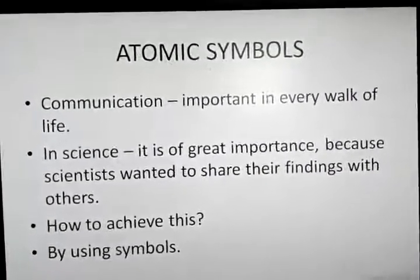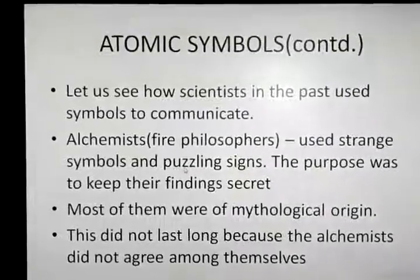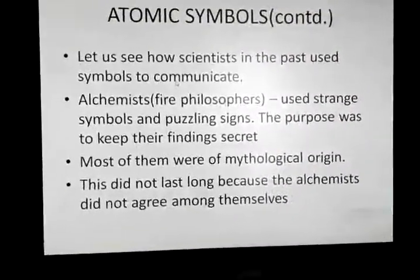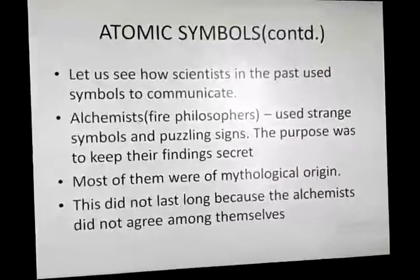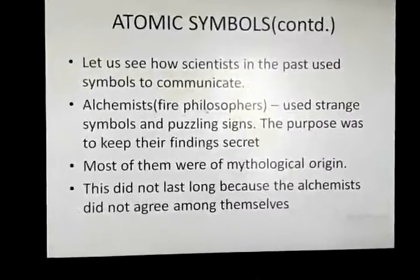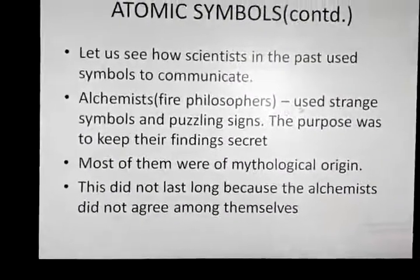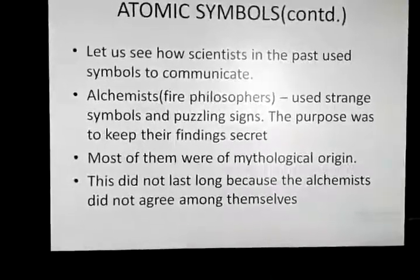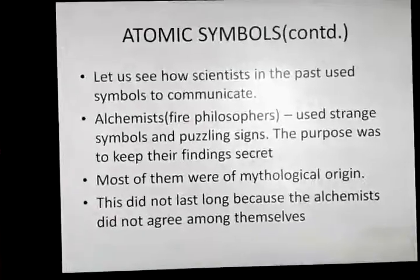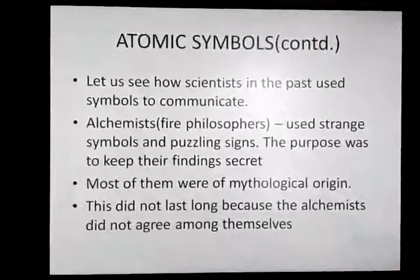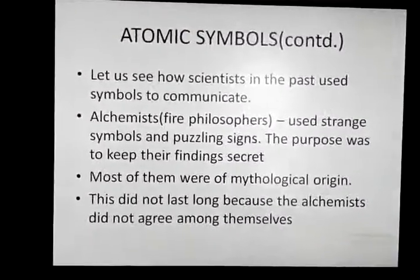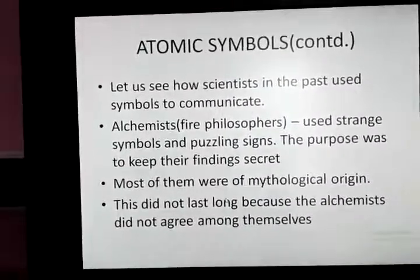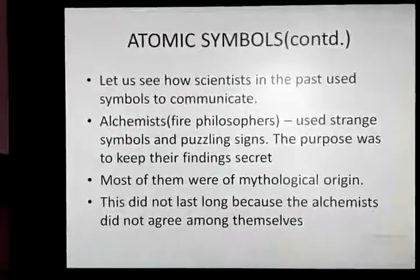The first topic is atomic symbols. How did scientists in the past use symbols to communicate? The first group we have are the alchemists — fire philosophers. These fire philosophers used strange symbols and puzzling signs. The purpose was to keep their findings secret; they didn't want other philosophers to know what they were doing. Most of these signs were of mythological origin.